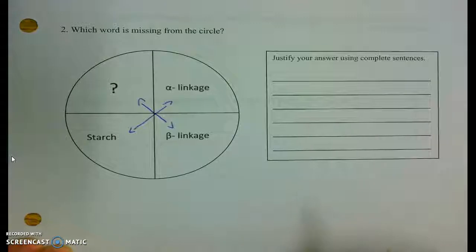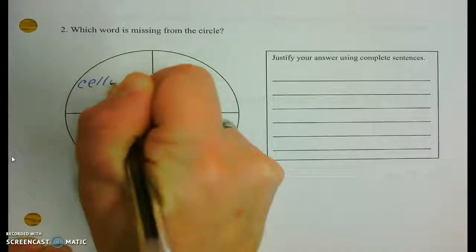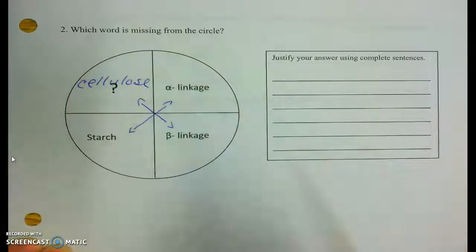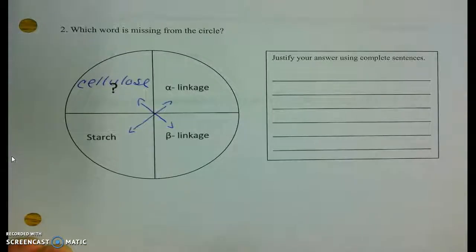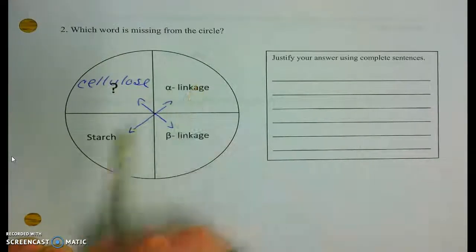So who possesses that harder-to-break beta linkage? Yep, that is going to be the structural polysaccharide found in plants. And that's going to be our good buddy, cellulose. It's harder to break because it's structural, easier to break because it's energy.